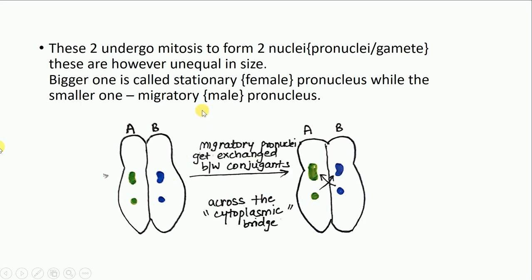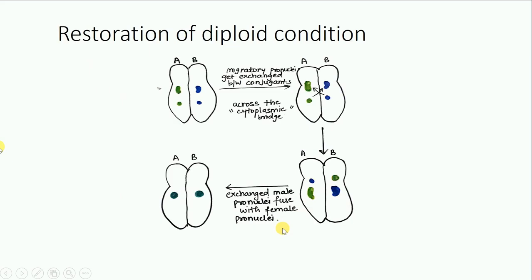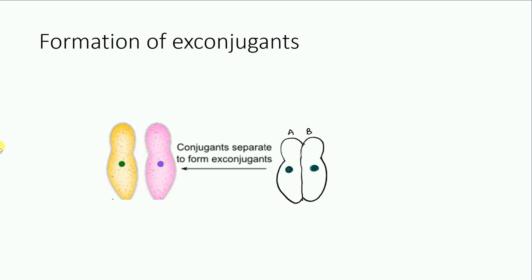The migratory or male pronucleus, as the name suggests, is active and it gets exchanged between the two conjugants across the cytoplasmic bridge. Once this exchange has taken place, each conjugant now has two haploid nuclei — one its own and the other exchanged from the other conjugant. The exchanged male pronuclei will fuse with the female pronuclei to form the zygote nuclei, which are diploid, and this restores the diploid condition within the paramecium. After this exchange and fusion, the two conjugants separate to form ex-conjugants, each with a diploid zygote nucleus.